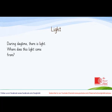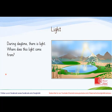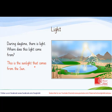Another factor important for life is light. During daytime, there is light. Where does this light come from? You can see this picture of a day — the light is coming from the Sun. Sunlight comes from the Sun. The Sun is the main source of light and heat on Earth.